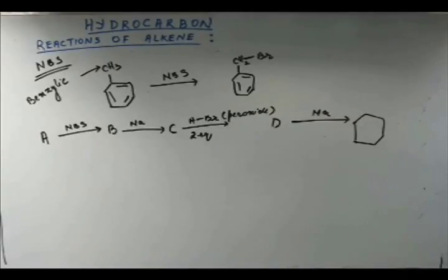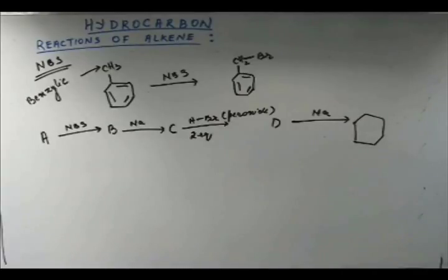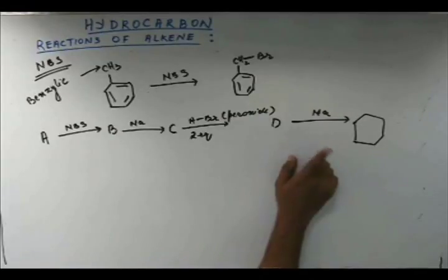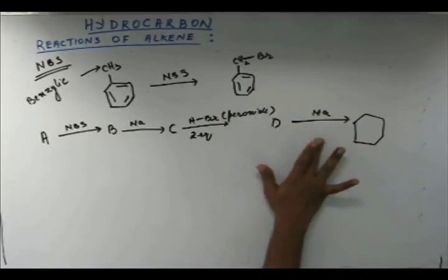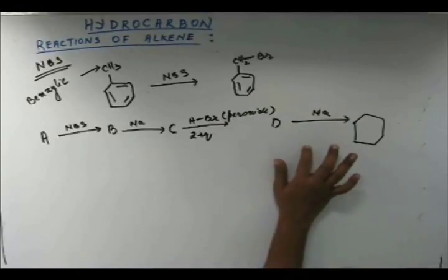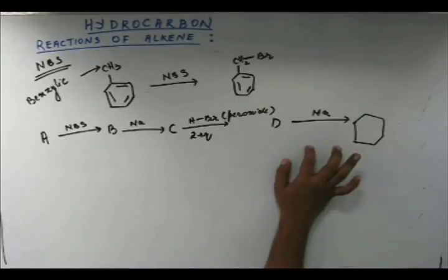Now I assume you have solved this. E is cyclohexane and D goes to E with sodium — nothing else given. From my syllabus, the only reaction where sodium alone is the reagent is Wurtz reaction. I have a gut feeling this is Wurtz reaction, and it indeed has to be Wurtz reaction. I can confirm it because I set the problem. So let's work with the assumption that this is a Wurtz reaction and find D.